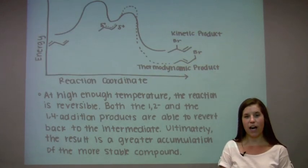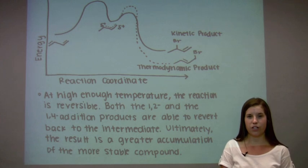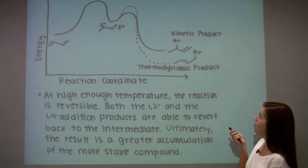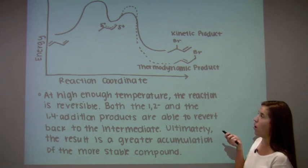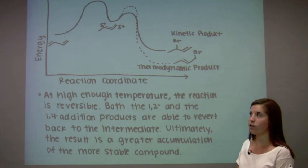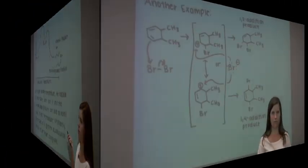In contrast, at high enough temperature, the reaction is reversible. Therefore, both the formed 1,2 and 1,4 addition products can revert back to the common intermediate. Ultimately, it results in the greater accumulation of the more stable product, which is the thermodynamic product.